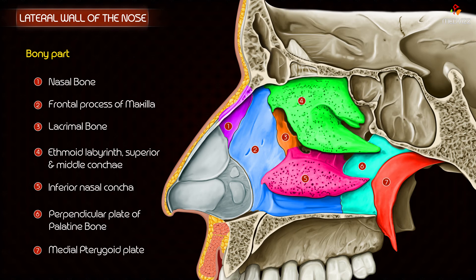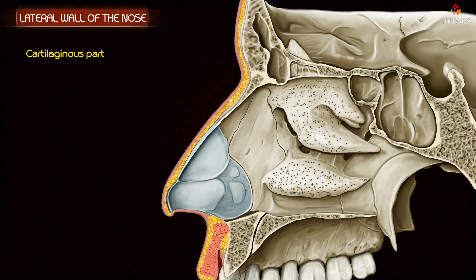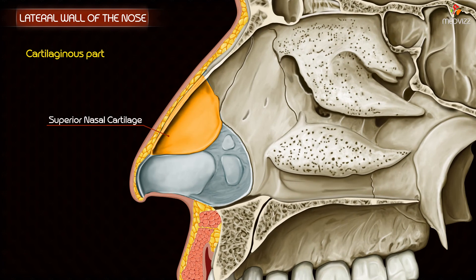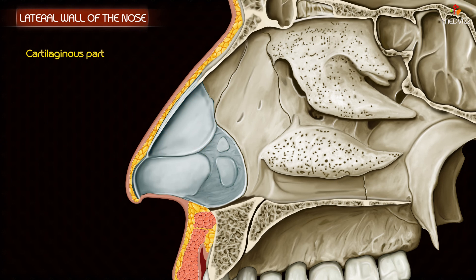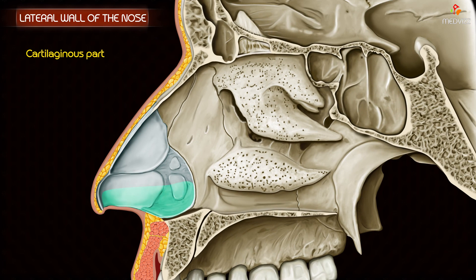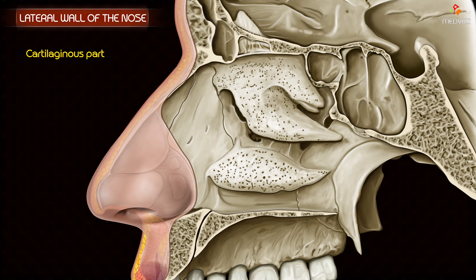The bony part also includes the medial pterygoid plate. The cartilaginous part is formed by the superior nasal cartilage, the inferior nasal cartilage, and three or four small cartilages of the ala. The cuticular lower part is formed by fibro-fatty tissue covered by skin.